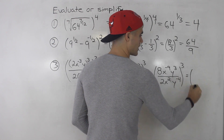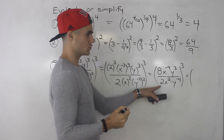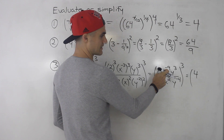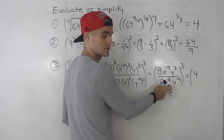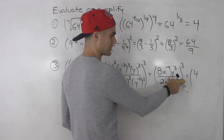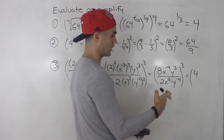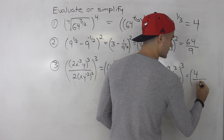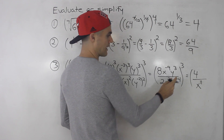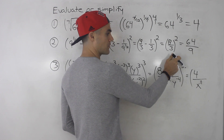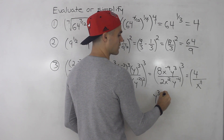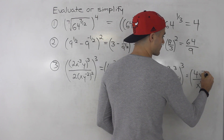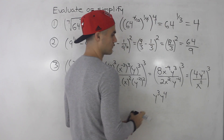Simplifying further: 8 over 2 gives us 4 on top. The x to the negative 9 comes down to the denominator, so x to the 2 times x to the 9 gives us x to the 11. The y to the negative 4 comes up to the numerator, so y to the 3 times y to the 4 gives us y to the 7. That's all to the power of 3.